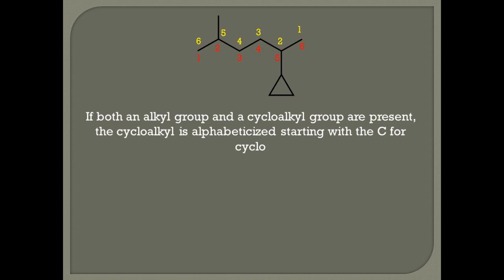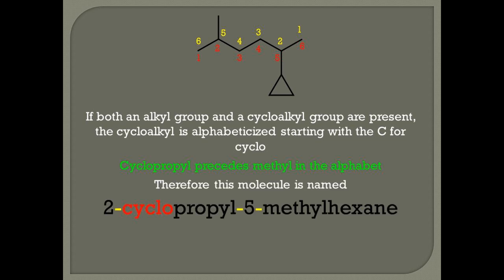Rule 5. If both an alkyl group and a cycloalkyl group are present on the main chain, the cycloalkyl group is alphabetized starting with the C for cyclo and not P for propyl. Therefore, cyclopropyl precedes methyl in the alphabet because C is before M. Therefore, this molecule is named 2-cyclopropyl-5-methylhexane.